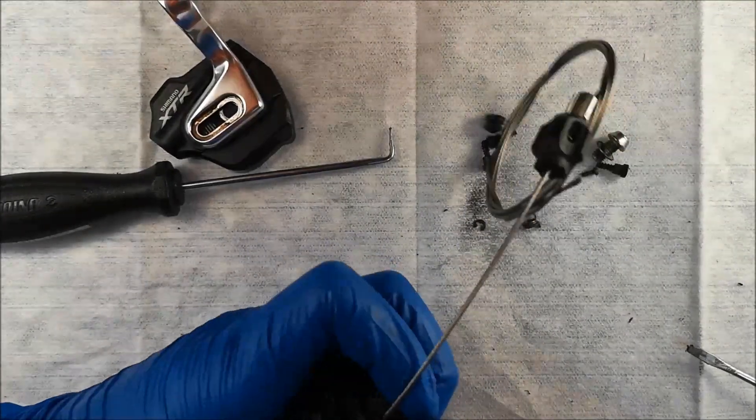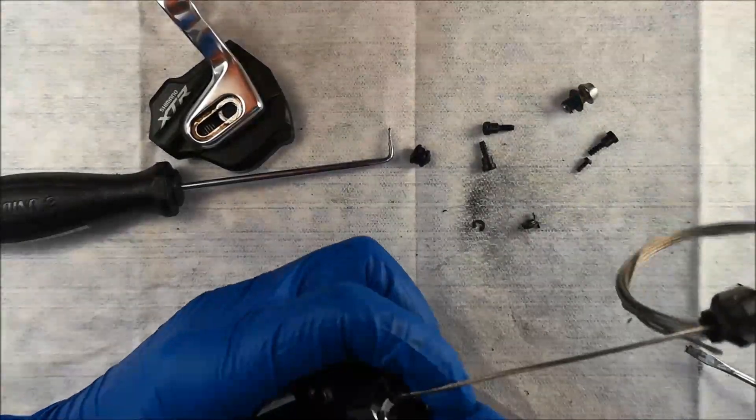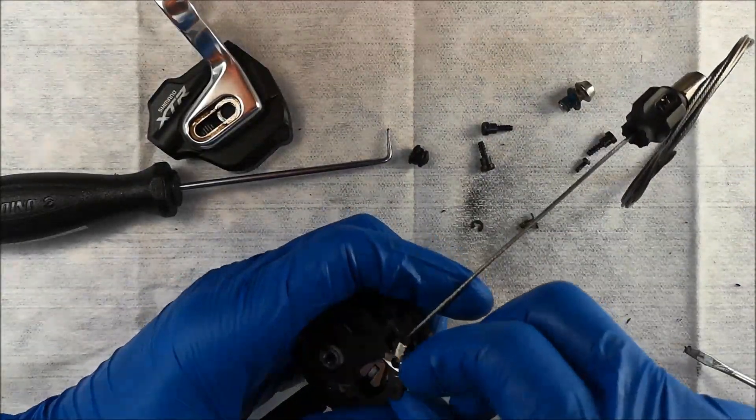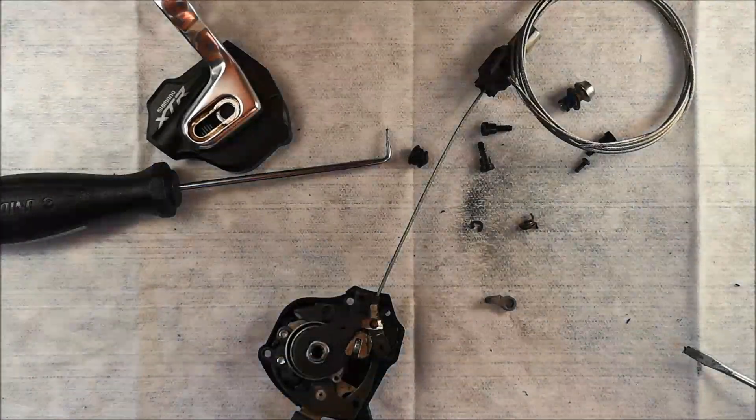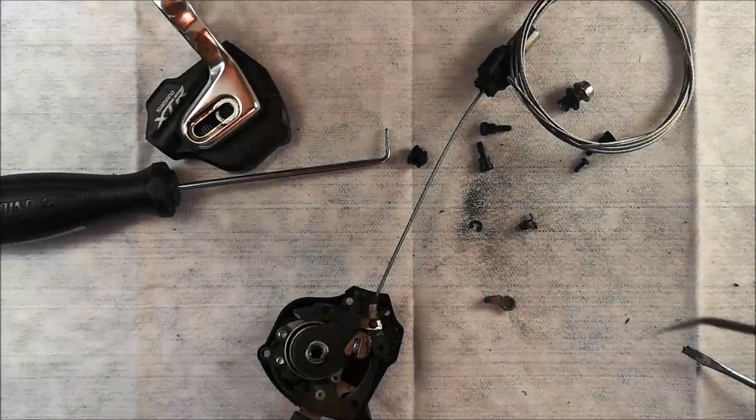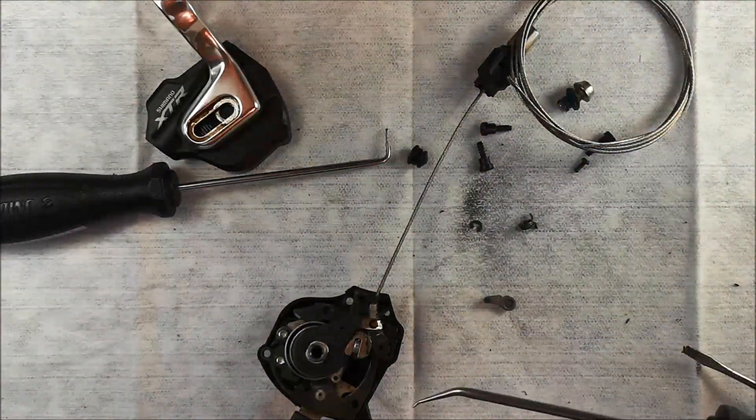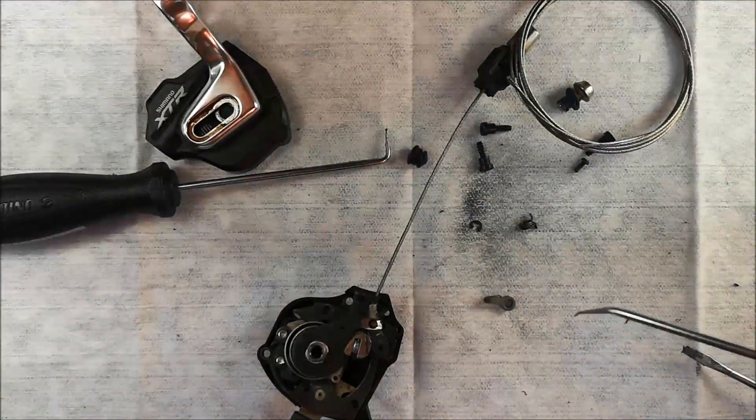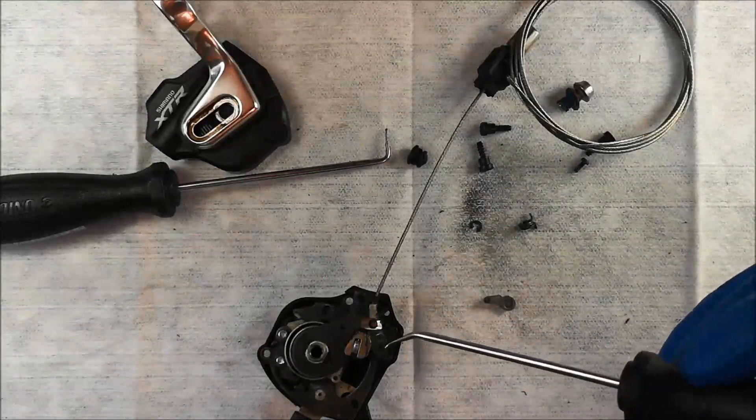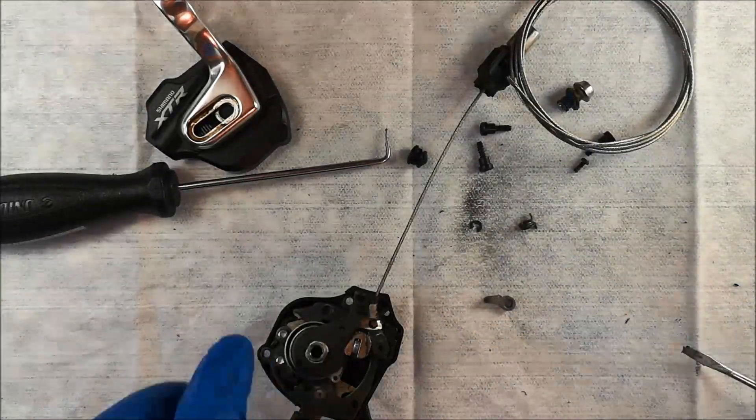Almost got it. There we go. So that little guy right there, that's the thing you want to remove. I don't know on how many Shimano shifters this will work for instance, but that's the little guy you want to remove from the shifters to stop it from ratcheting.